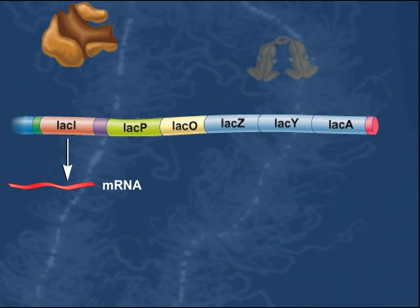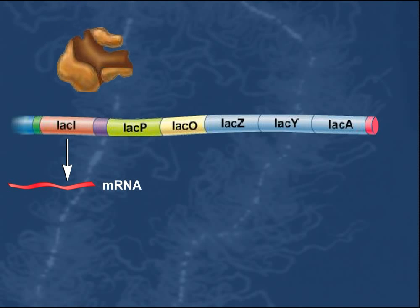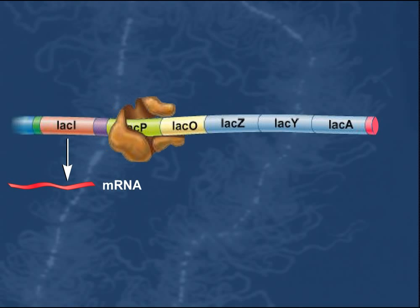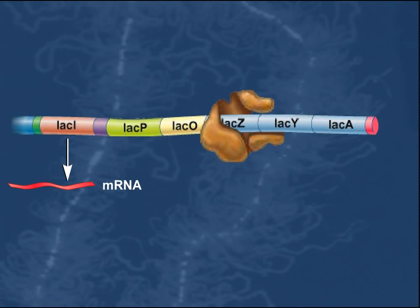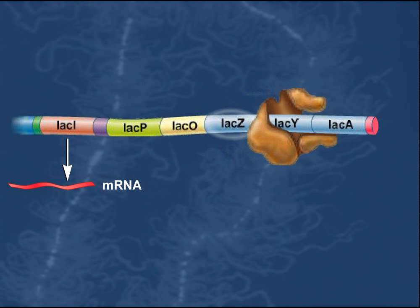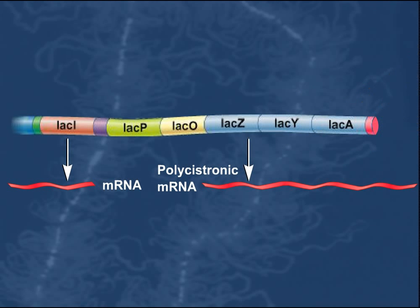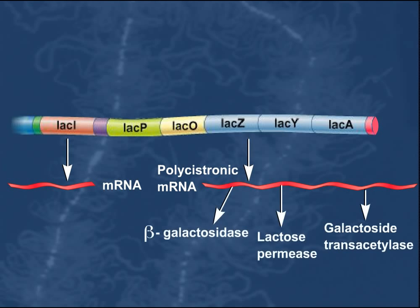Without an active LAC-Repressor bound to the LAC-Operator site, RNA polymerase is able to bind to the promoter, and a polycistronic messenger RNA is transcribed that includes the LAC-Z, LAC-Y, and LAC-A genes.